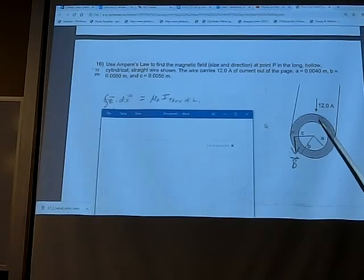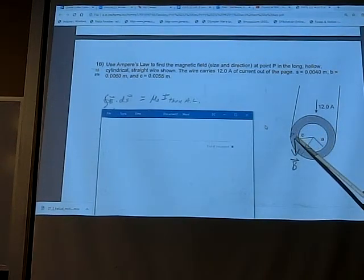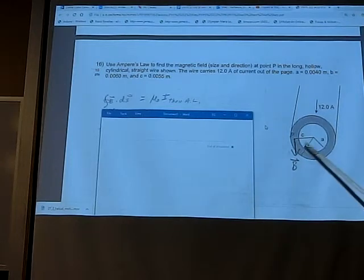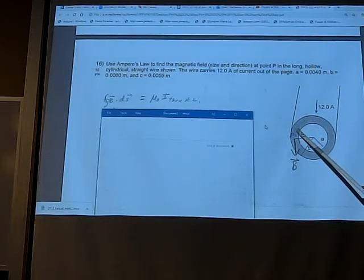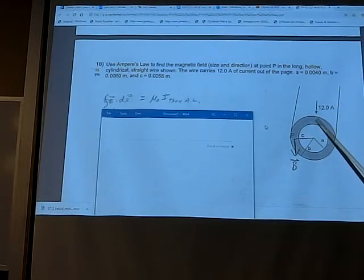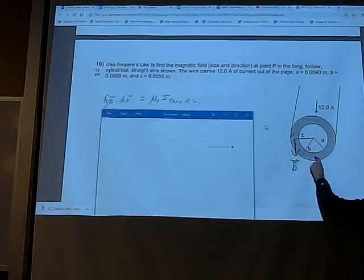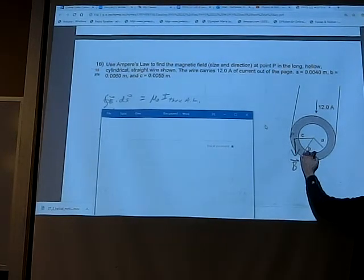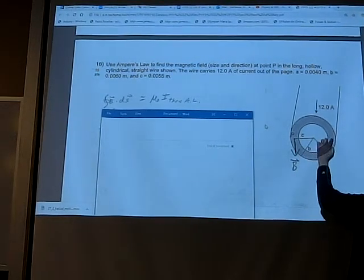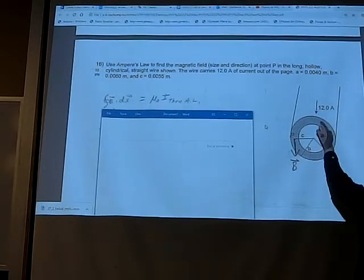So how do we do that? Well, we would want to pick an imaginary loop that B is going to have the same value everywhere on that loop. So imagine a circle drawn through point P that's centered on the actual center of the wire. You should guess that because that circle is equally distant to the outer edge and the inner edge of the wire, that the field strength should be the same everywhere on that circle. So we meet one condition.